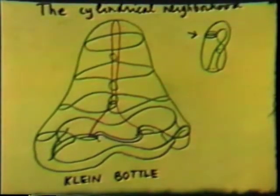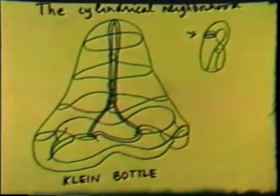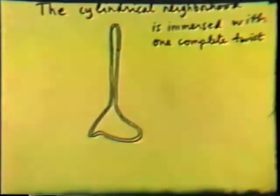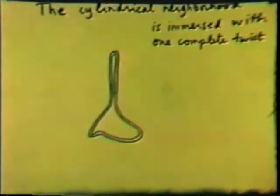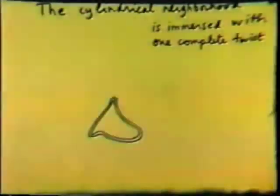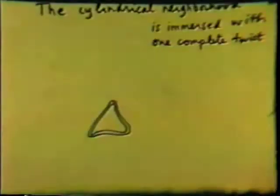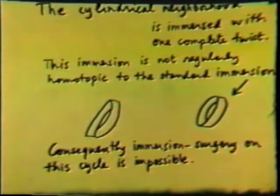The cylindrical neighborhood is immersed with one complete twist. Here we are shortening the neighborhood, contracting it, and now expanding it so as to compare it with the standard cylinder. They're not regularly homotopic. Consequently, immersion surgery on this cycle is impossible.